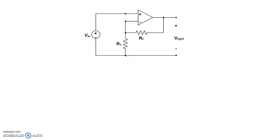The goal is to figure out what is Vout with respect to Vin and the resistors R1 and RF. Just like before, let's start out by making an assumption that this is an ideal op-amp. That means the current going into these terminals is equal to zero. It also means that the voltage at node V+ and the voltage at node V- are identical, so V+ equals V-.